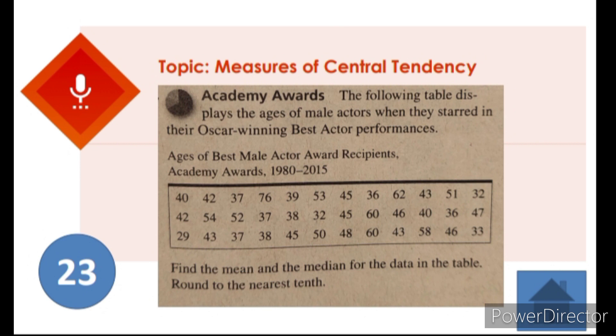The first step we should do is to arrange the ages from the lowest to the highest age. After we arrange the ages, let us make our frequency distribution table to get the values that we need for finding the value of our mean and median.